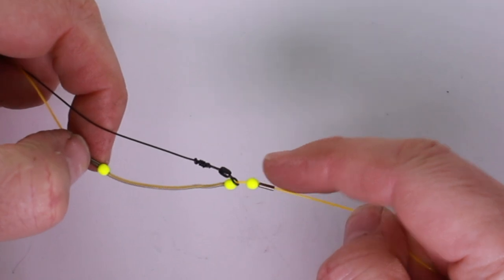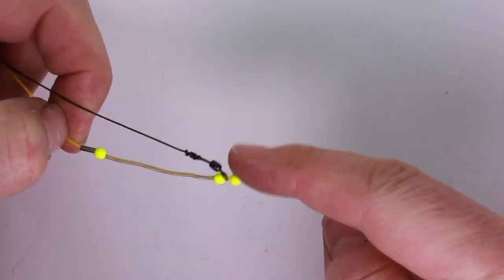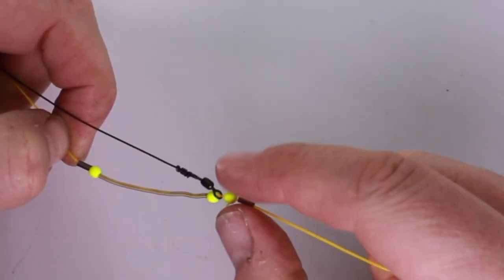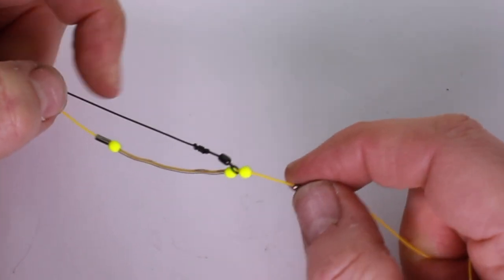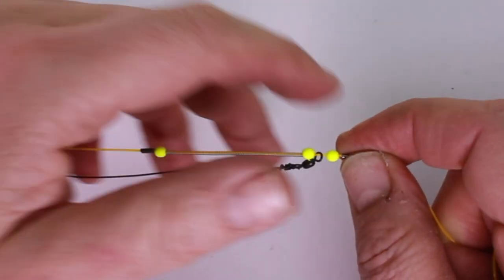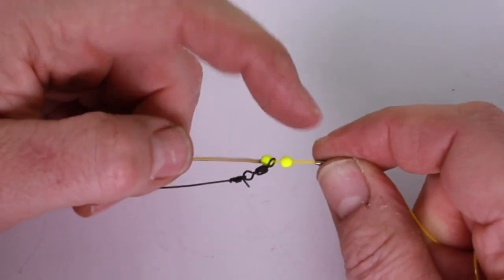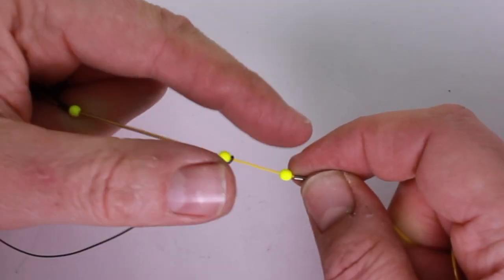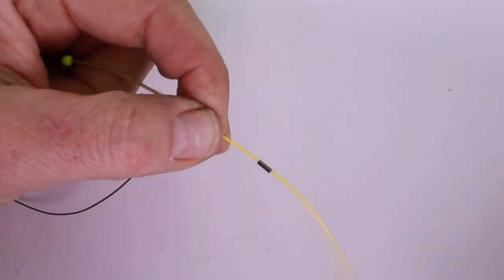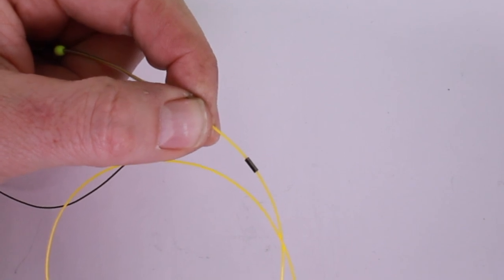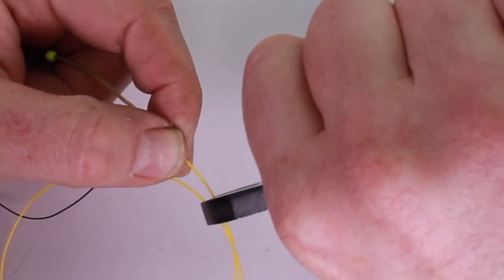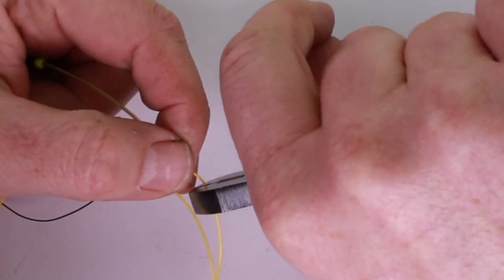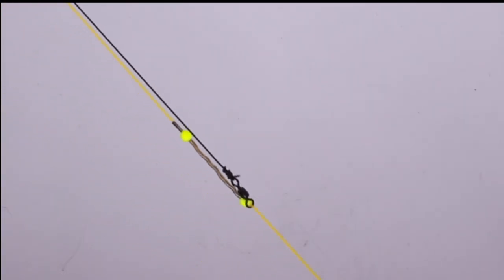And leaving a little bit of slack at the top there for that last crimp. That's the one that my finger's pointing to, about there. Again about a thumb, thumb width away from that top bead.